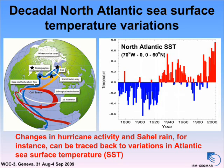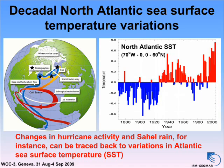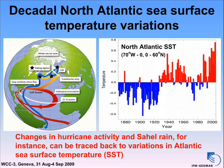You see an example here — the North Atlantic sea surface temperature averaged from the equator to 60 north — and you see nicely superposed on the long-term warming trend the strong multi-decadal variations. The Sahelian rainfall and the hurricane activity show fairly similar variations during the 20th century.